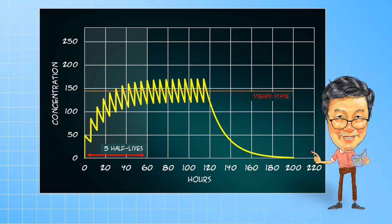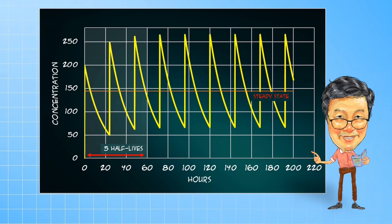Conversely, when you increase the dosing interval to 24 hours, while the time to reach steady-state remains unchanged, the fluctuations increase and the accumulation decreases. The steady-state concentrations all this while remains exactly the same.